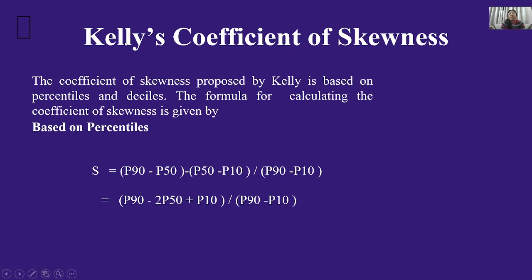Kelly has also given a coefficient of skewness. If you have percentile or decile values, you can use Kelly's formula. The coefficient of skewness proposed by Kelly is based on percentiles and deciles: S = (P90 − 2·P50 + P10) / (P90 − P10). The two most popular formulas are Carl Pearson's — based on mean, median, mode, and standard deviation — and Kelly's — based on percentile and decile.